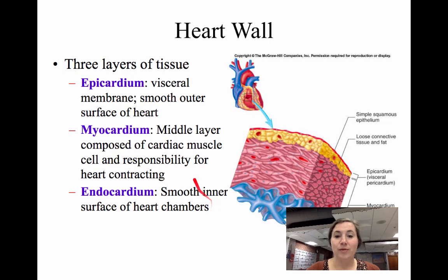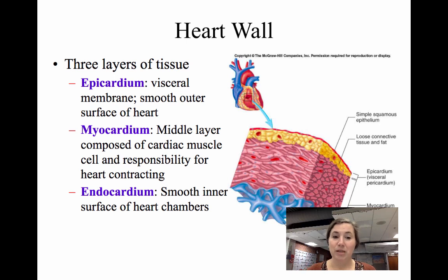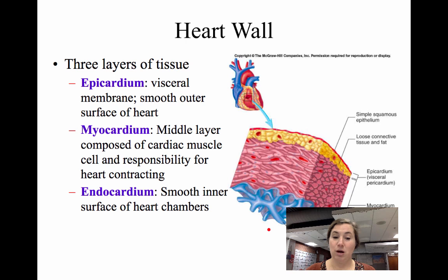Looking at the heart wall: the visceral pericardium on the outside is also called the epicardium — they refer to the same membrane, right on the surface of the heart. Beneath that is the myocardium — the prefix 'myo' means muscle — which is the thickest layer, made of cardiac muscle responsible for contraction. On the very inside is the endocardium, the smooth inner surface of the heart chambers, which allows blood to flow smoothly through them.